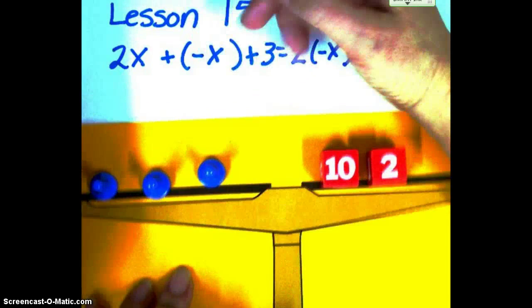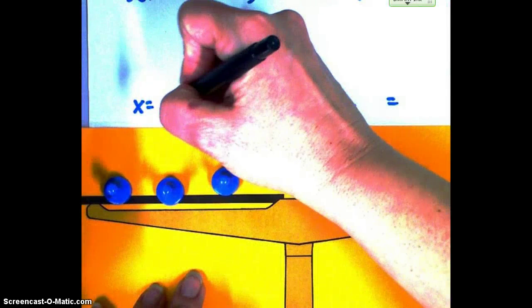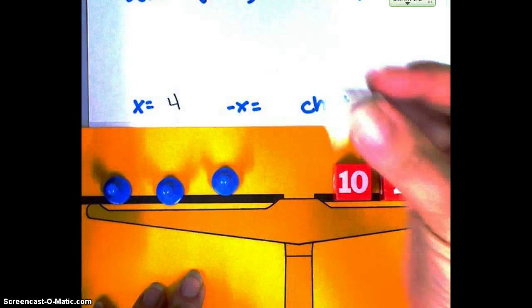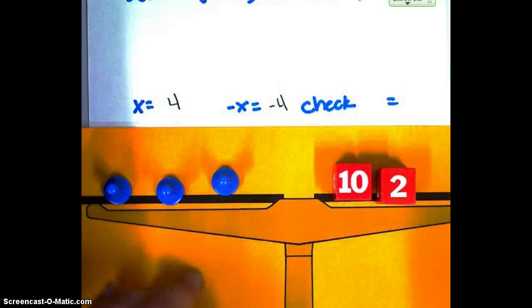So on this one, x equals 4, which would mean my white one, my negative x, would equal a negative 4. And if I go back and check it,